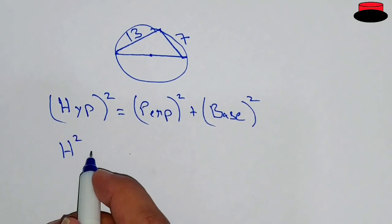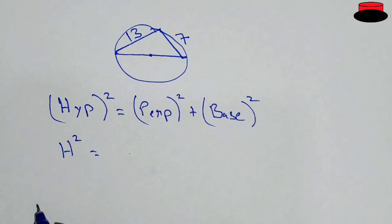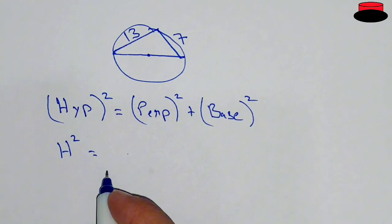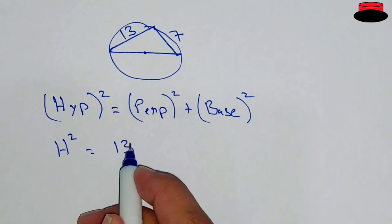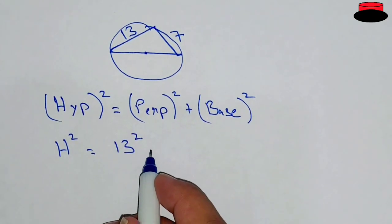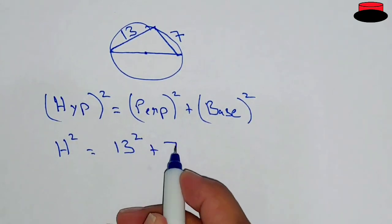So hypotenuse squared equals, and the perpendicular is 13 in this case, so it will be 13 squared plus 7 squared.